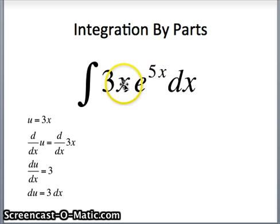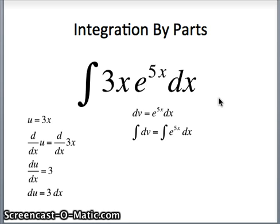So we made our choice for u. This thing e to the 5x dx is going to have to be dv. We need a u and a dv with integration by parts. So dv is e to the 5x dx. We're going to get v by integrating both sides. Integral of dv is the integral of e to the 5x. Here we go. That's what I gave you in the review problem. The integral of e to the kx is e to the kx over k plus c. It'll be e to the 5x over 5 plus c.